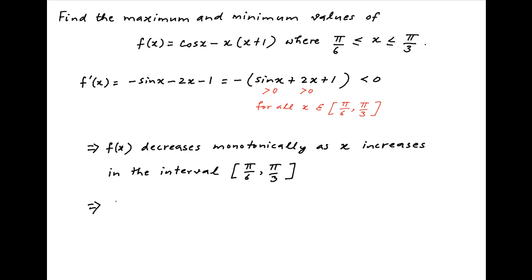Therefore, the maximum value of f(x) will be reached at the lower end of the interval, that is at x = π/6. Therefore, the maximum value of f(x) is equal to f(π/6) which is equal to cos(π/6) - π/6(π/6 + 1). And this is equal to 1/2 - π/6(π/6 + 1).